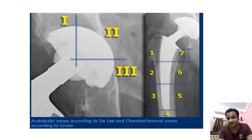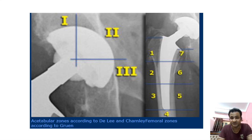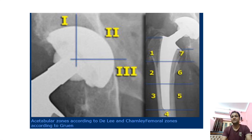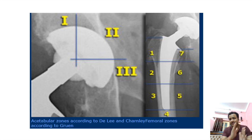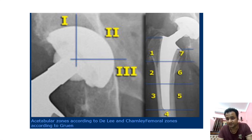One complication after prosthesis placement is loosening. We can divide the joint into three quadrants: anything in zone one is considered normal, but in zones two and three, any lucency seen between the prosthesis and the main limb is considered pathological. There is also another division of seven zones based on the femoral shaft — zone one is normal and the others are not considered normal.